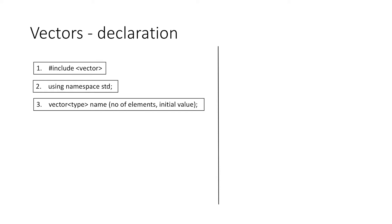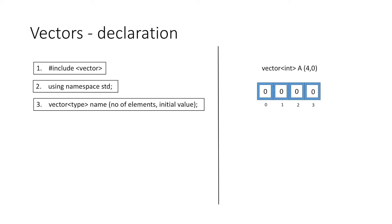So let's take an example to understand it better. Here we have declared a vector and we have defined the type as int, that is it will contain integer values. The name of our vector is 'a', and within the round braces we are specifying that our vector will contain four elements and we have initialized all four elements to zero. Therefore, our vector will look something like this, which is similar to an array containing four elements.